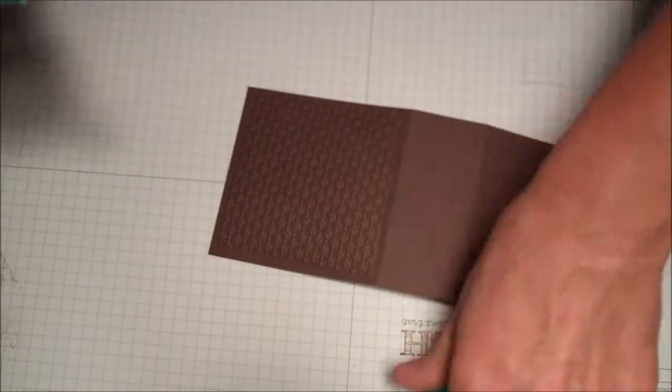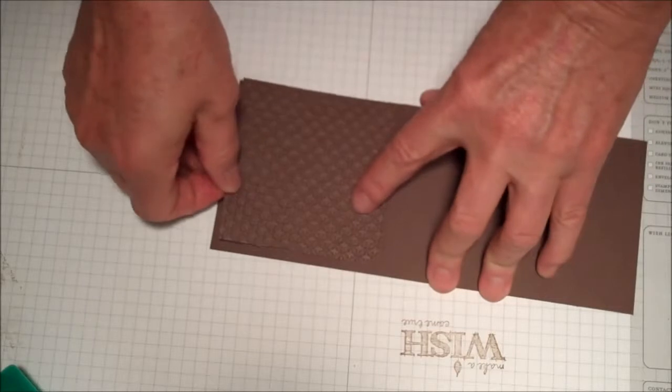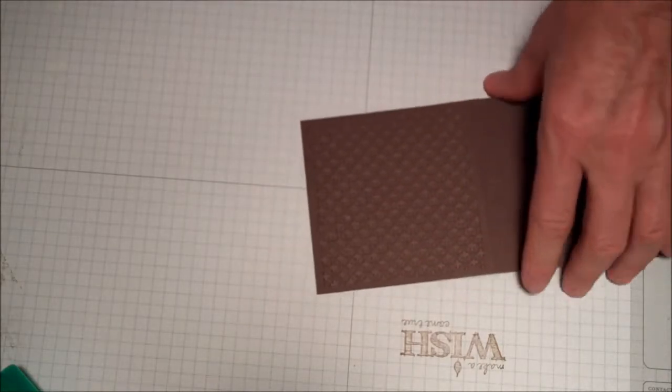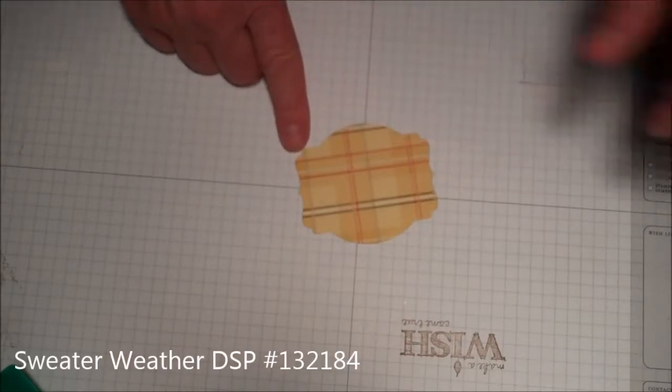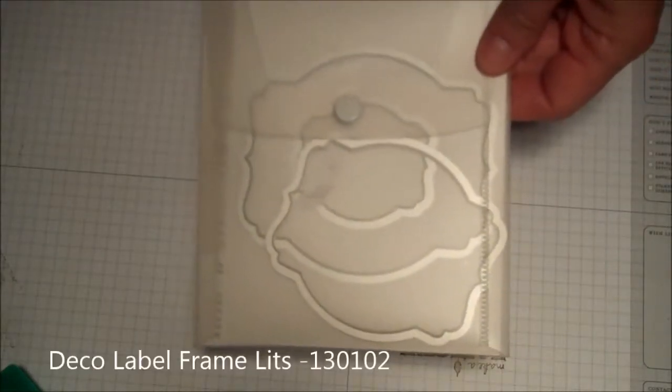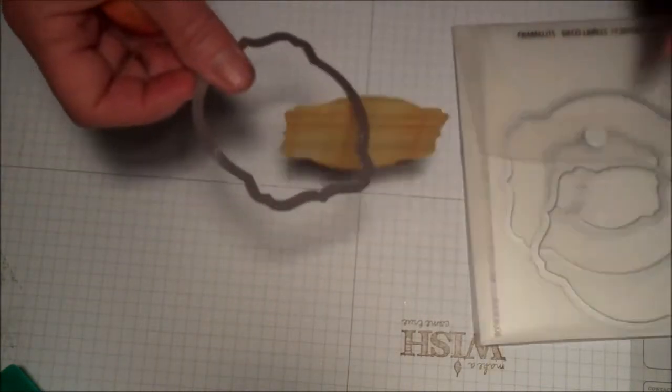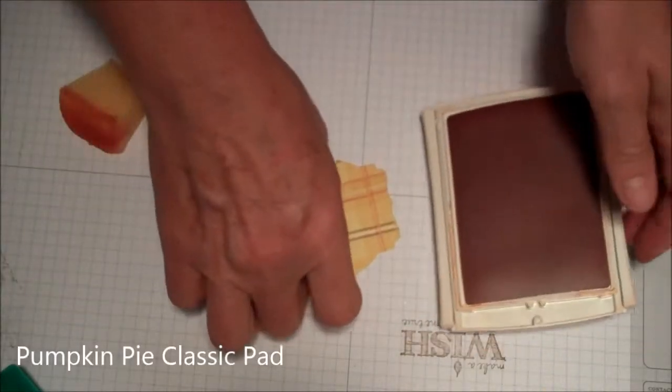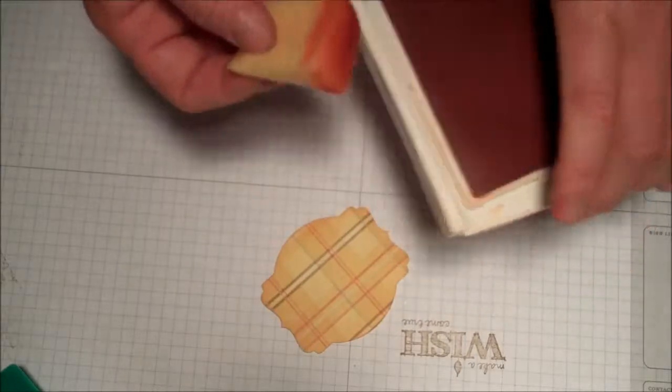The next step was to get this piece from the Sweet Sweater DSP and cut it out using the deco labels. I used the second to smallest deco label, ran it through the Big Shot using my magnetic board. I'm using some Pumpkin Pie because that's the color in the DSP, so I'm just going to sponge around the edge.